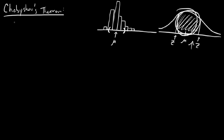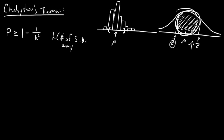That way is through Chebyshev's theorem, which basically states that the proportion of values — we'll call that P — from a data set that fall within K standard deviations of the mean will be at least 1 minus 1 over K squared. K in this instance is a lot like Z in the sense that it stands for the number of standard deviations away from the mean.